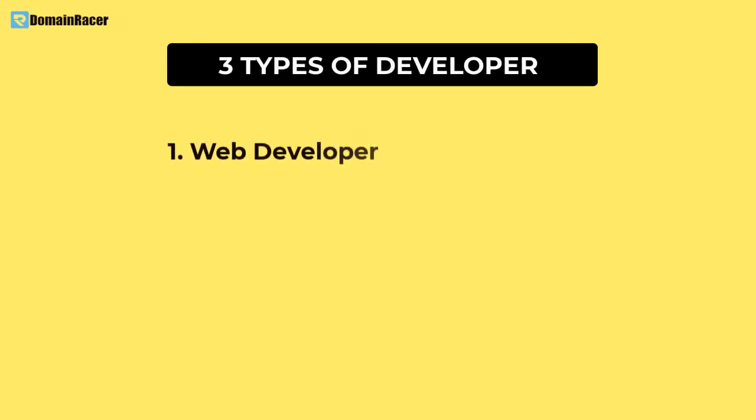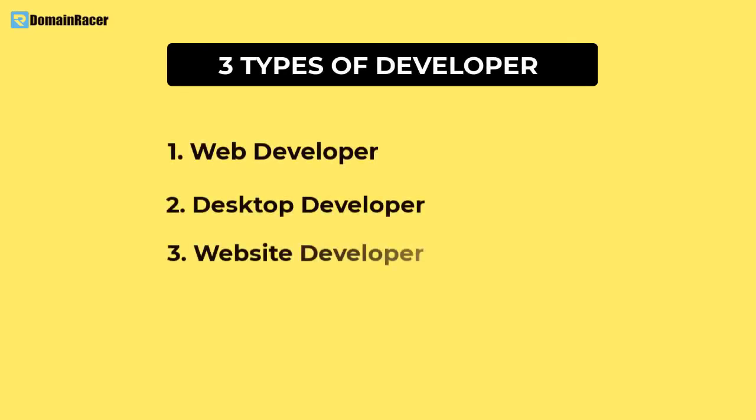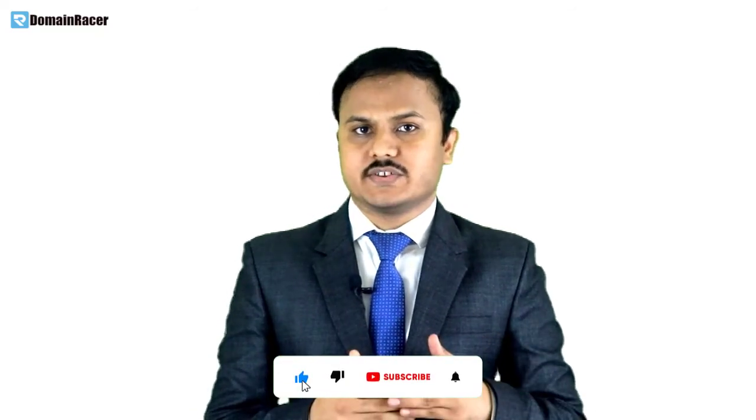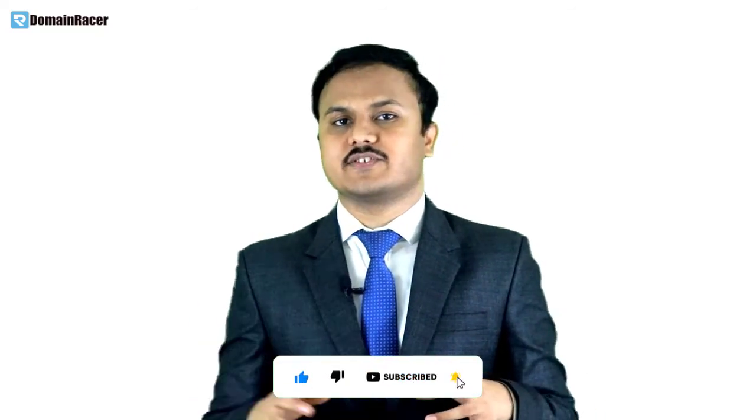We have covered everything about the differentiation between WordPress developer versus a web developer. Now let's move towards the hierarchy. At the top of the hierarchy is a developer. Developers are of three types: web developer, desktop developer, and website developer. Web developers are of two types: web developer and website developer. When we go deeper, WordPress developer only comes under WordPress development. If you have any queries or want similar content, please comment below with your ideas.